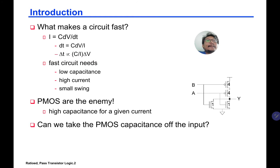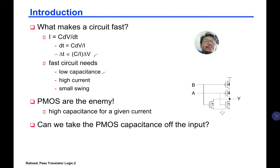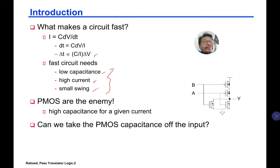What makes a circuit fast? The circuit is fast if it has high current — it's all about how fast you can charge your load capacitance on the output node. Current depends on C·dB/dt according to this equation. A fast circuit needs low capacitance CL, high current (which means low resistance), and a small voltage swing — small VDD. But PMOS are the enemy: high capacitance for a given current. Can we take the PMOS out of the input, use only NMOS, or reduce the number of PMOS?